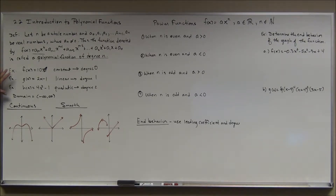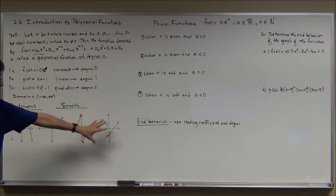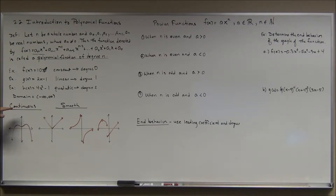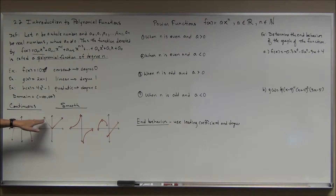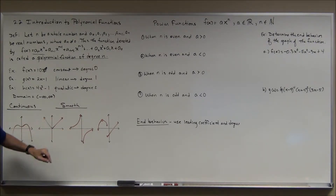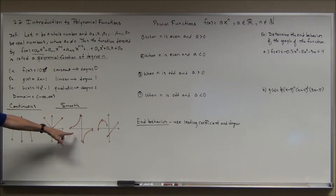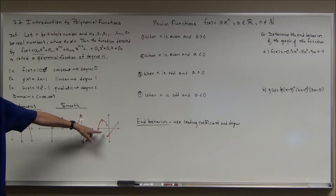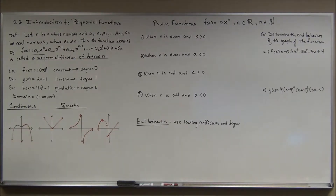There are four graph examples here illustrating the words continuous and smooth. Continuity in math means much the same as in everyday life — no breaks, skips, or jumps. A function is continuous if you can graph it without picking up your pencil. The first two graphs are continuous; you can draw them without lifting the pencil. The third has a vertical asymptote — a break — so it is not continuous. The fourth has a hole, so it is also not continuous.